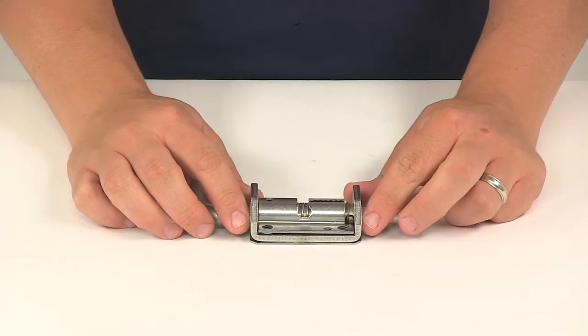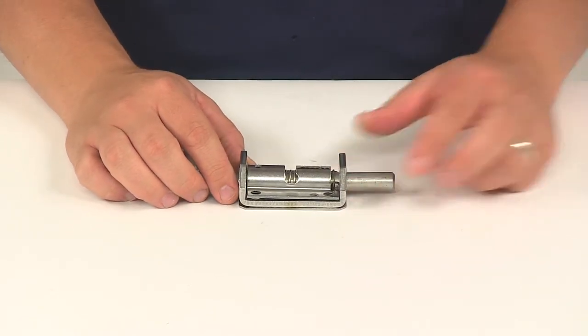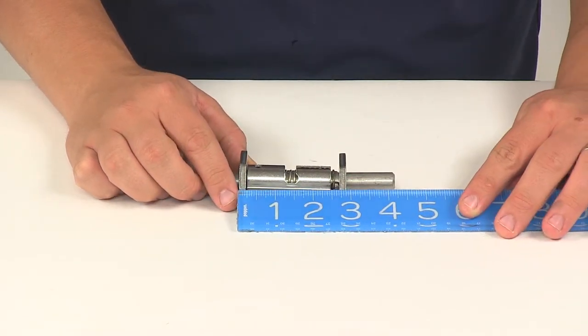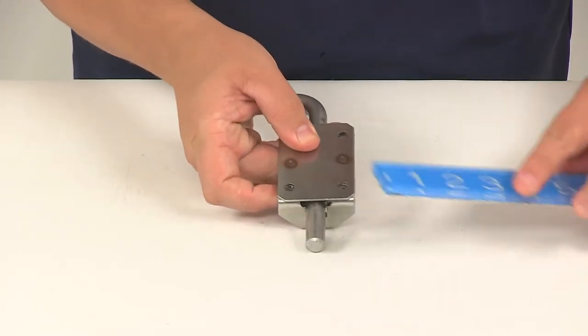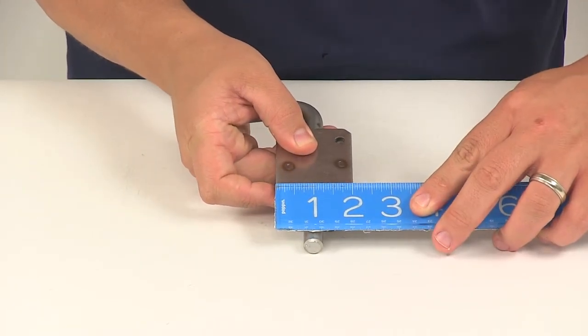When it comes to the dimensions of the bracket, it measures this direction, edge to edge, two and seven eighths of an inch. This direction, edge to edge, about two inches.